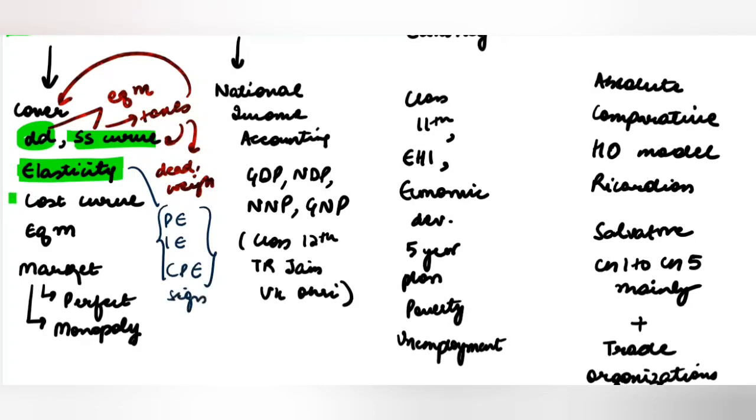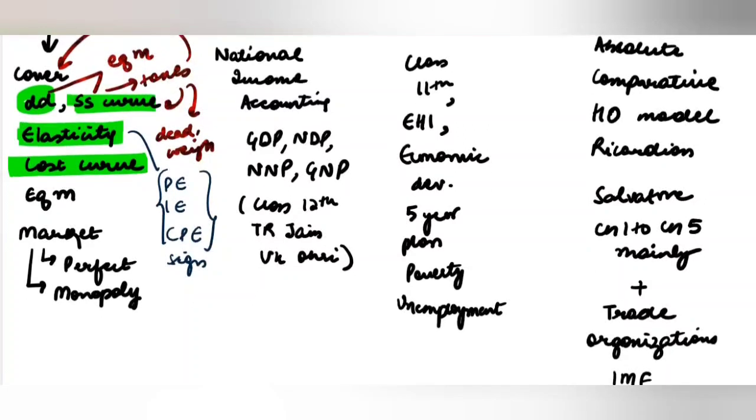Then you have to cover different cost curves like average variable cost, total variable cost, fixed cost, average fixed cost, marginal cost, etc. Then you have to cover the equilibrium conditions.